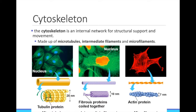The cytoskeleton is also involved in movement. Just like how your bones need to interact with muscles to move, the cytoskeleton has to interact with motor proteins to provide movement. A small protein called dynein is found where movement is occurring in the cell. It is powered by ATP, and it literally walks along the microtubules.